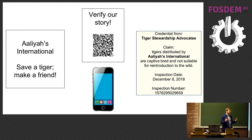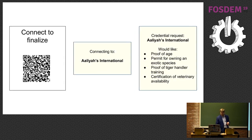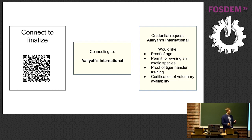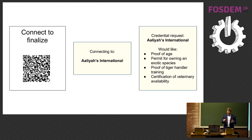Of course I have to do research — who is Tiger Stewardship Advocates? Do I trust them? I look around on the internet, they seem well-respected, so I'm going to trust them. There's a QR code that generates an individual connection — I generate a new DID and share it with Alleyes International. Now they want some information from me: that I'm allowed to have a tiger in my city, that I'm an adult who can make this decision, that I have tiger handler training, and that I have access to a vet.